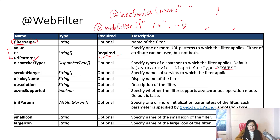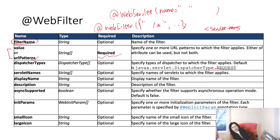You can also have servletName, which specifies the servlets to which the filter applies. So instead of using URL pattern, you can use servlet name. But this is a little different from XML configuration, because in the annotation you must have a URL pattern — then you can optionally add servlet name. So they are not 100% the same.